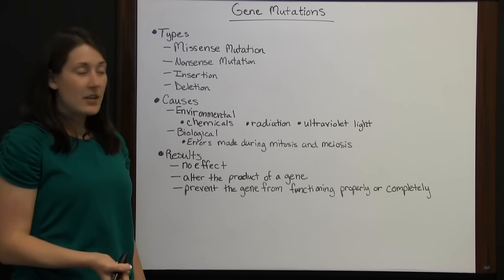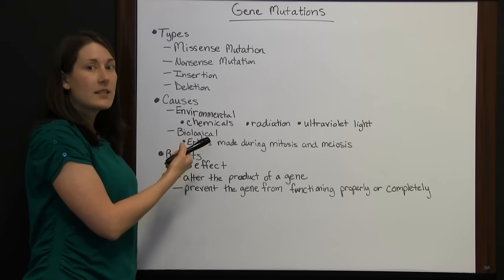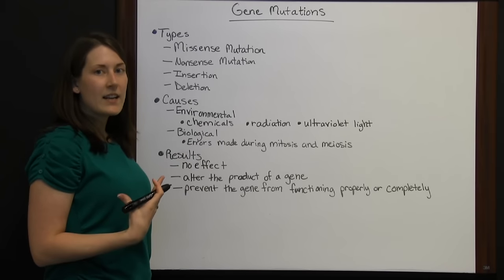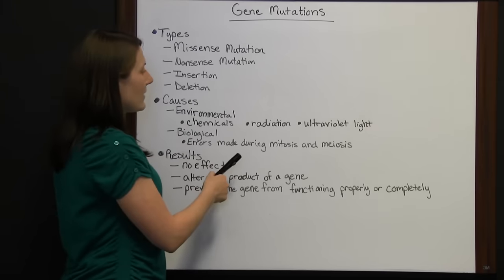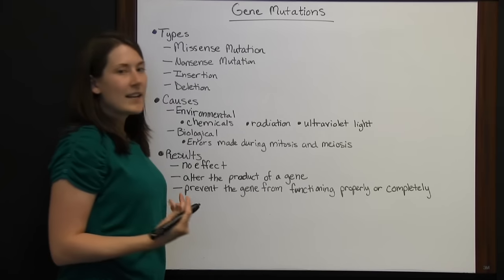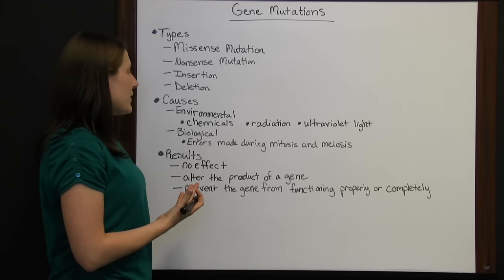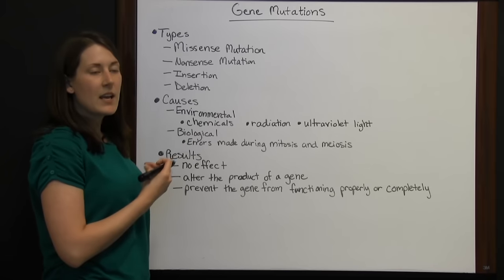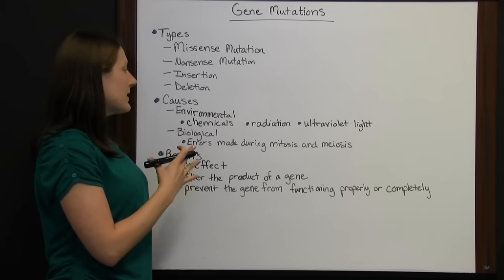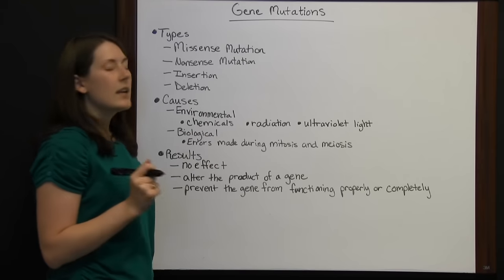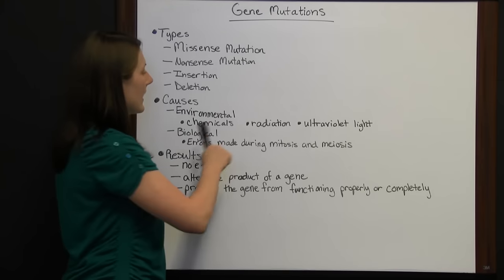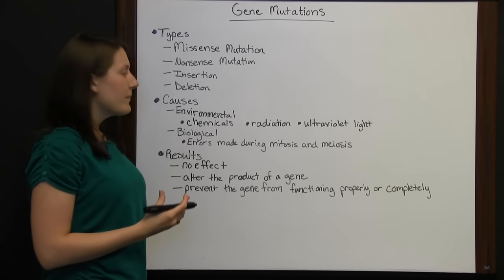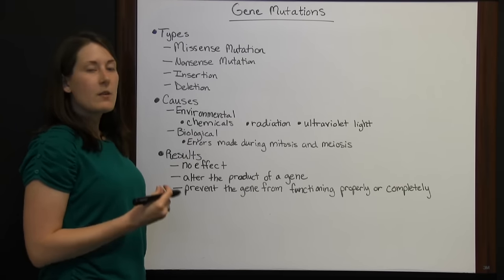Some causes for gene mutation are environmental — such as chemicals that you either ingest or that touch your body, radiation, and ultraviolet light from the sun. If you have too much, or sometimes just any amount, of certain chemicals, and too much radiation or ultraviolet light, it can make your cells mutate.